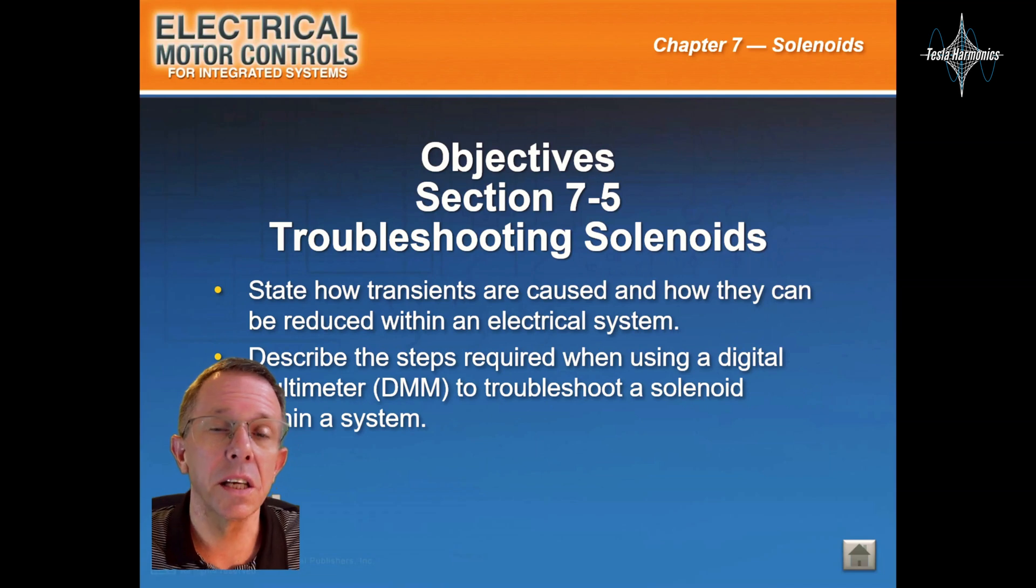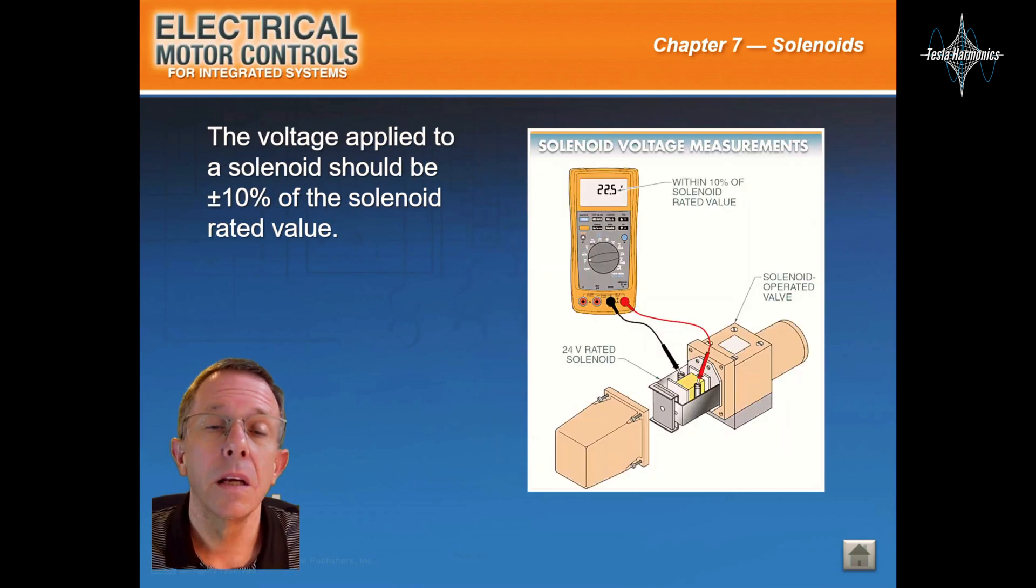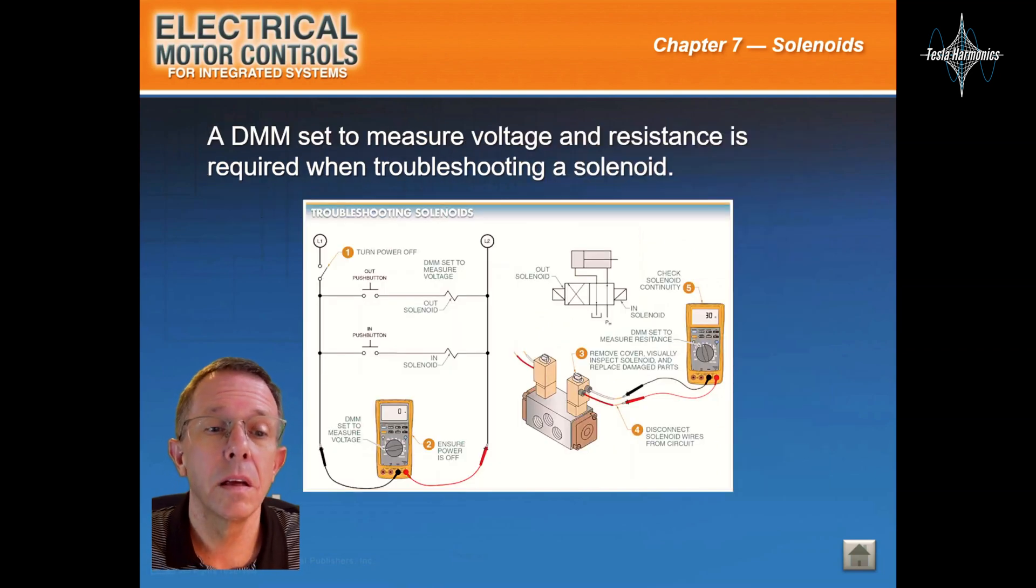This will be section 7-5 troubleshooting solenoids. Manufacturer charts are used to help determine the cause of solenoid failure. The voltage applied to a solenoid must be plus or minus 10% of the solenoid rated value. A DMM set to measure voltage and resistance is required when troubleshooting a solenoid.